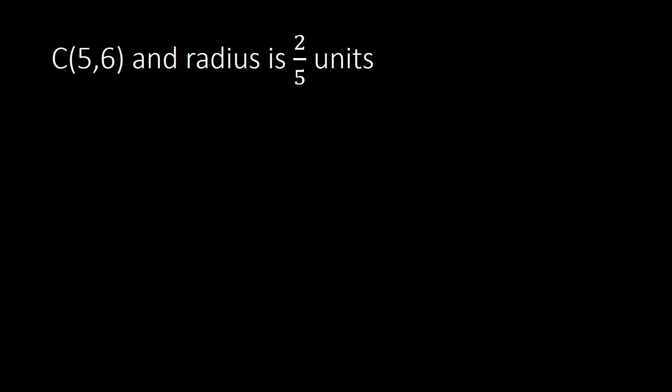Let us now go to another example. You may pause the video and try it, then resume once you have the standard equation of your circle. Here we have center (5, 6) and radius 2/5. We set up (x − h)² + (y − k)² = r², where r is 2/5.